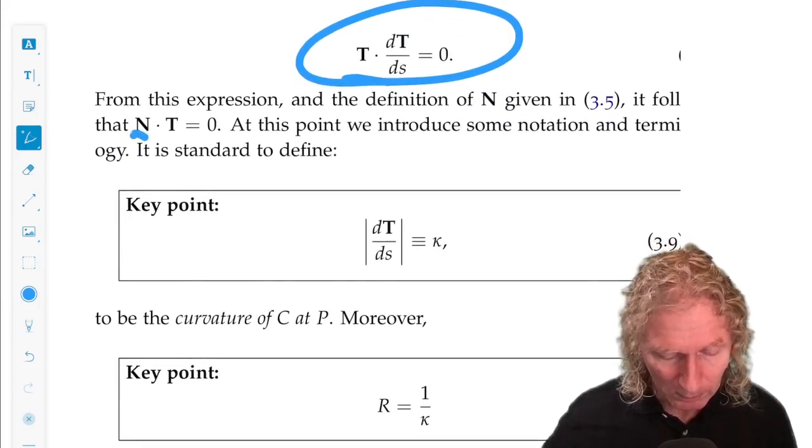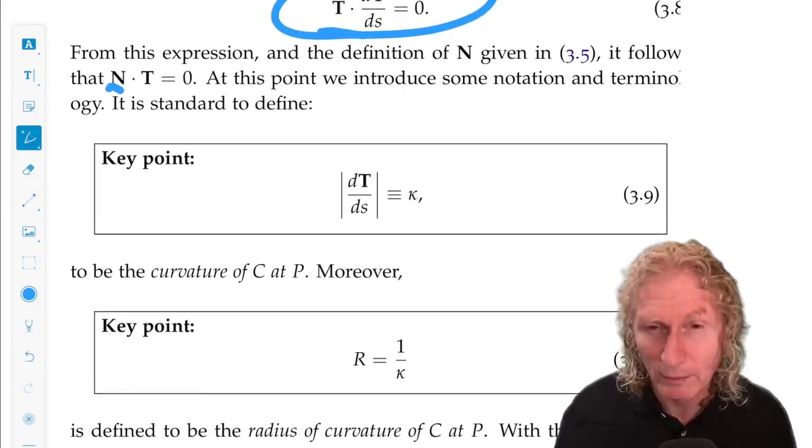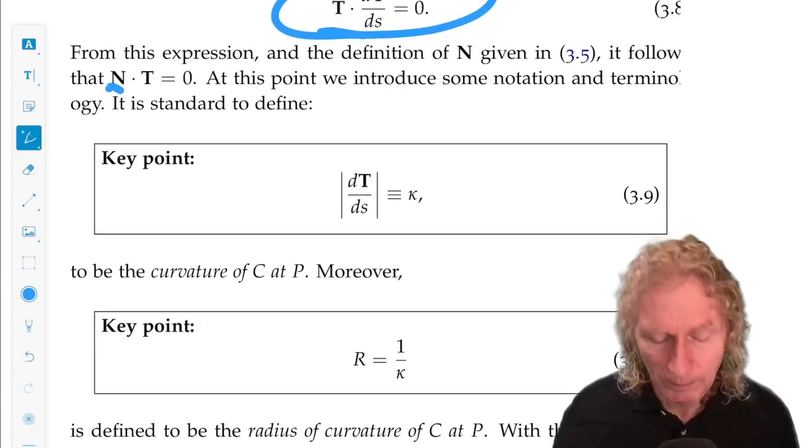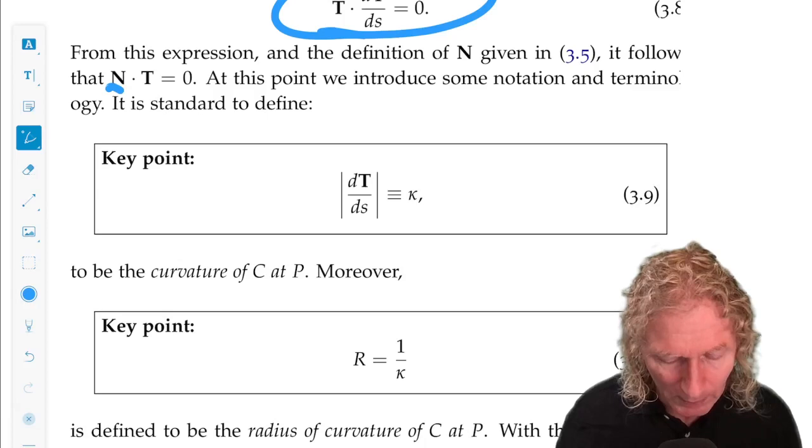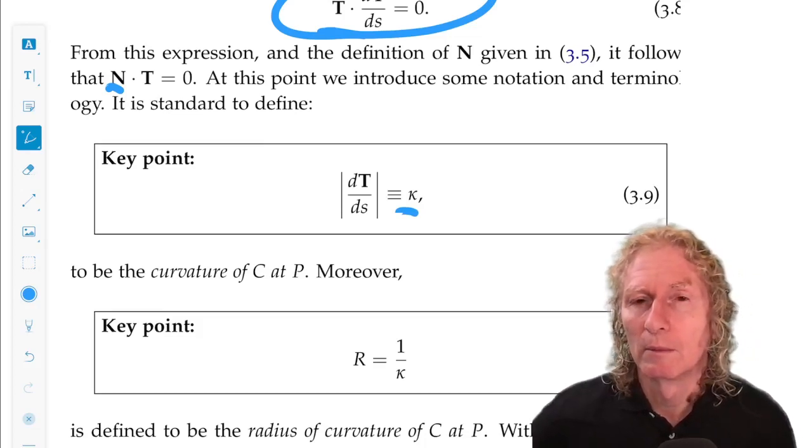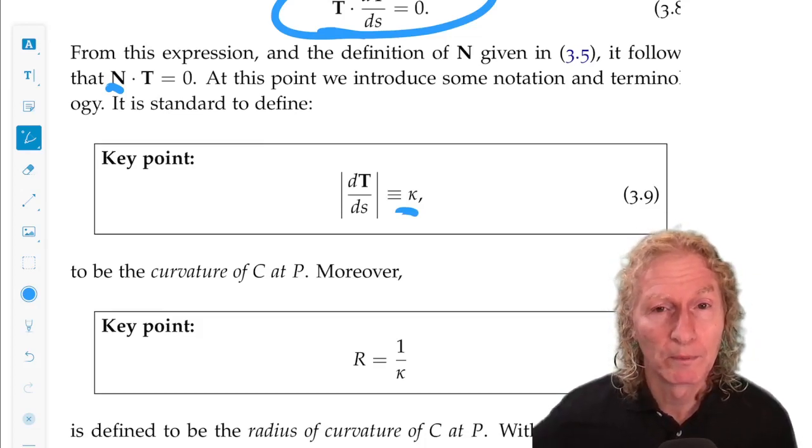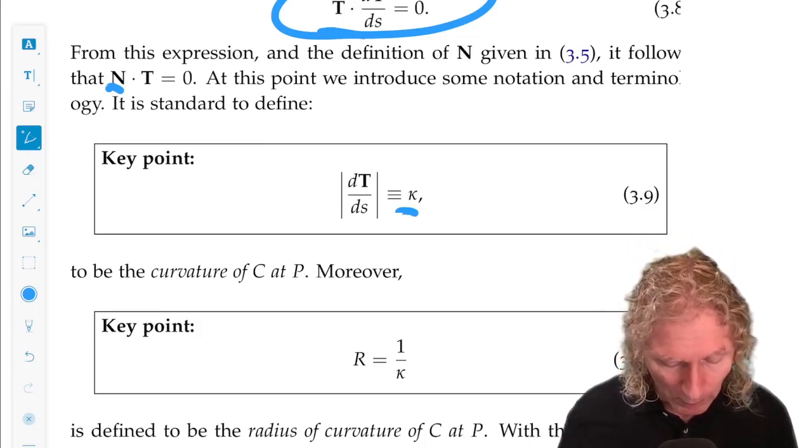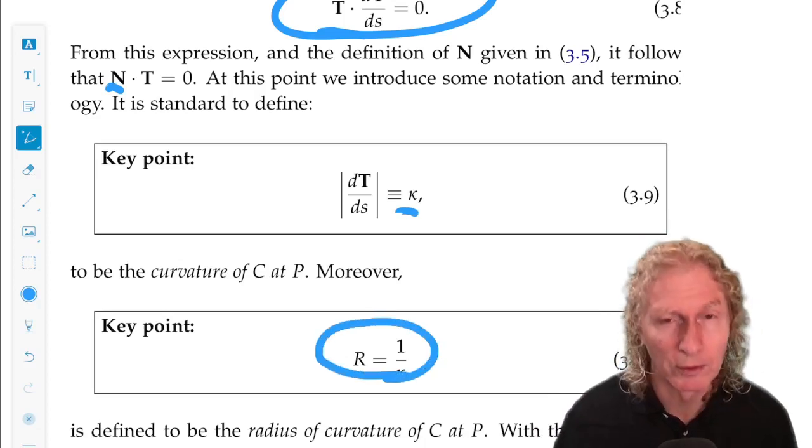And for our final, we haven't quite got there yet, we have two constants we want to introduce. The magnitude of dT/ds we'll call kappa, it's a number, and that's the curvature of the curve at C. And 1 over the curvature is the radius of curvature.